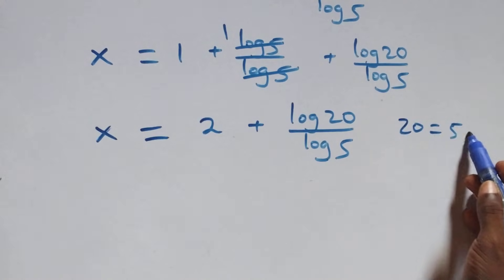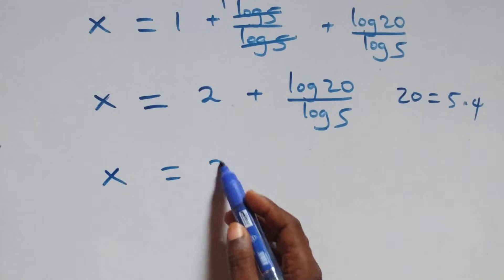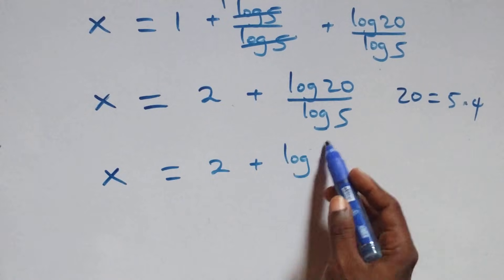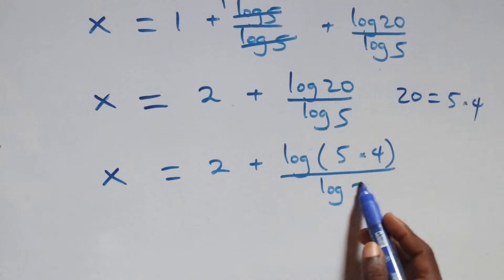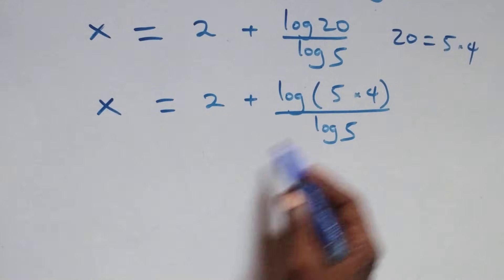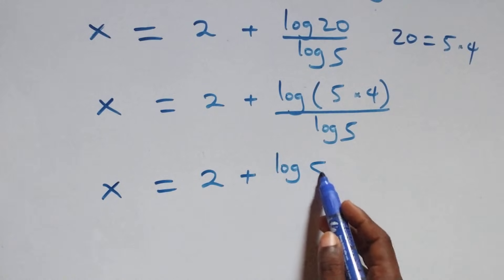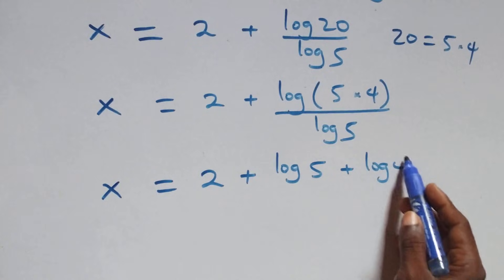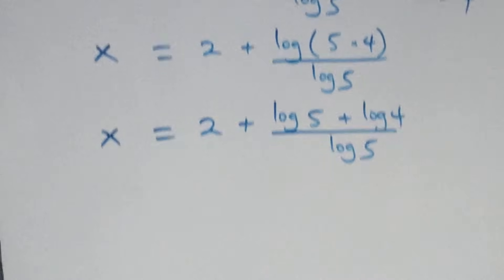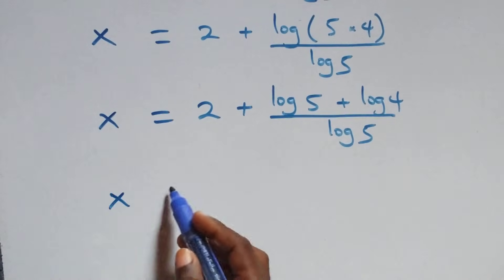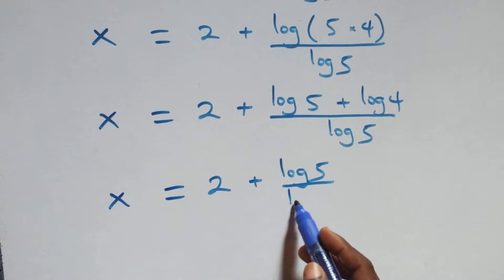Also, 20 can be written as 5 times 4. Which implies x equals to 2 plus log of 5 times 4 over log 5. Applying the product rule gives x equals to 2 plus log 5 plus log 4 over log 5. We separate into two fractions: x equals to 2 plus log 5 over log 5 plus log 4 over log 5.